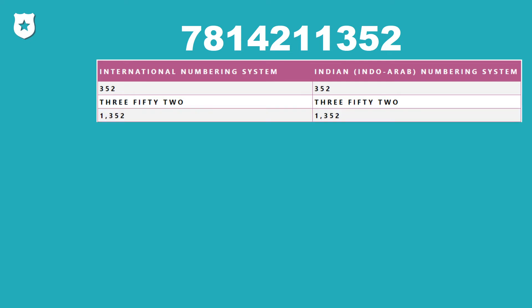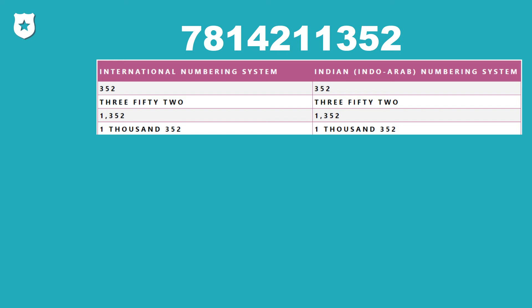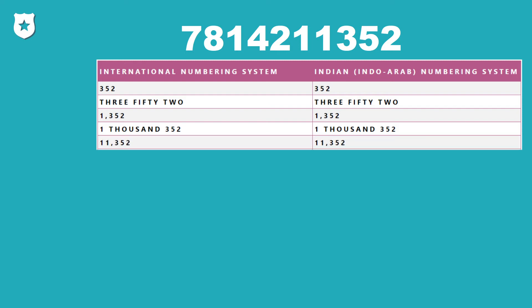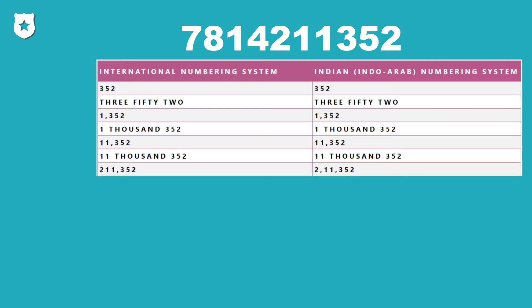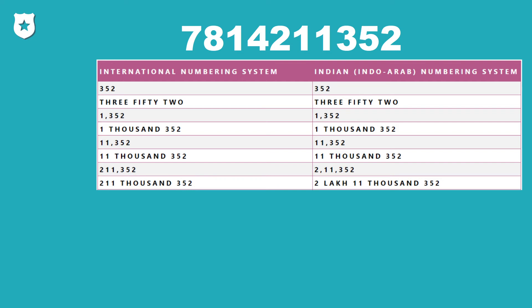Now the number is 1,352 — in both systems this will be read as 1,352. Adding the next digit gives us 11,352, which is read the same in both systems. Adding another digit gives 211,352; in the international numbering system this reads as 211,352, and in the Indian numbering system this number also reads as 211,352.